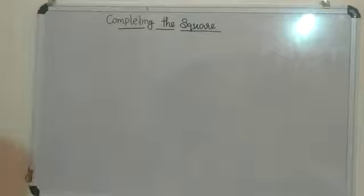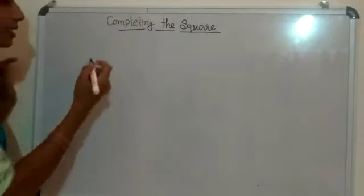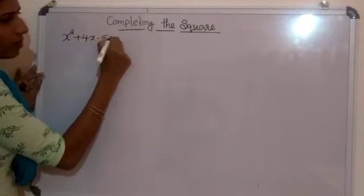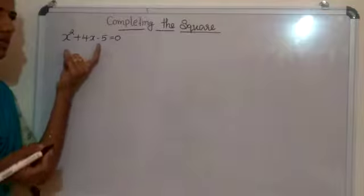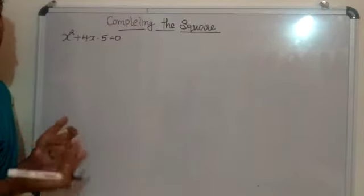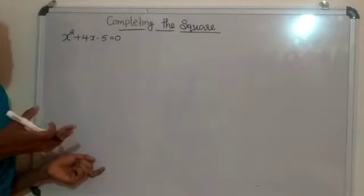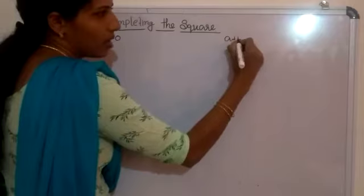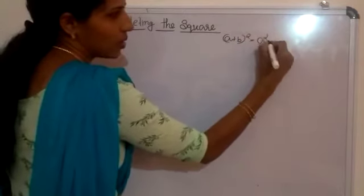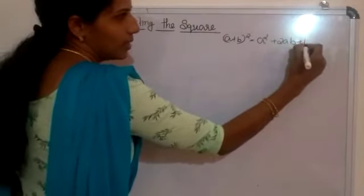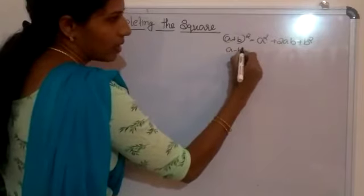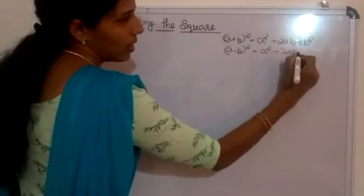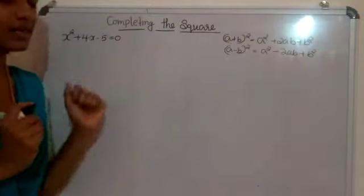I will explain this through one example. Consider the quadratic equation x² + 4x - 5 = 0. We need to convert this equation into a square form, that means we need to convert it using identities. We have already learned the identities: (a + b)² = a² + 2ab + b², and (a - b)² = a² - 2ab + b².